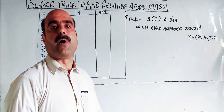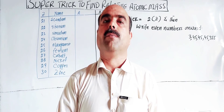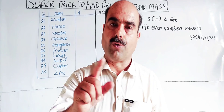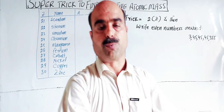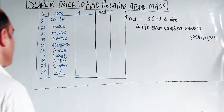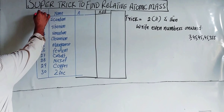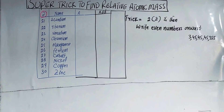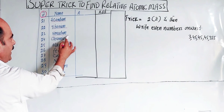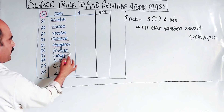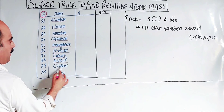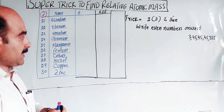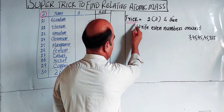Now a trick for finding the mass number of elements whose atomic numbers are from 21 to 30. These are the transition metals: Scandium 21, Titanium 22, Vanadium 23, Chromium 24, Manganese 25, Iron (Ferrum) 26, Cobalt 27, Nickel 28, Copper 29, and Zinc 30.